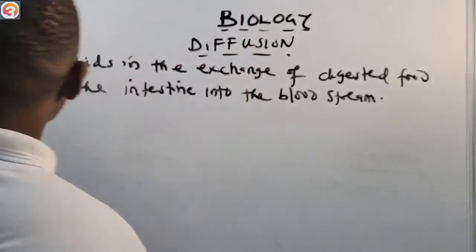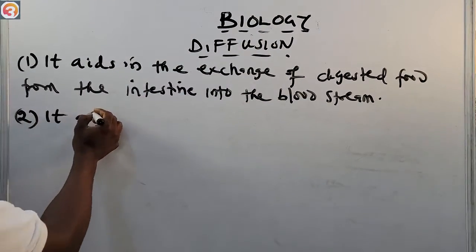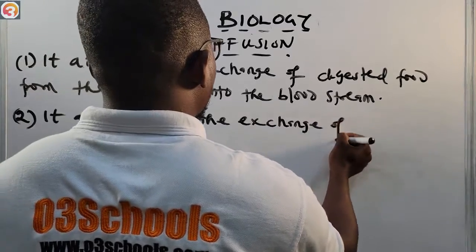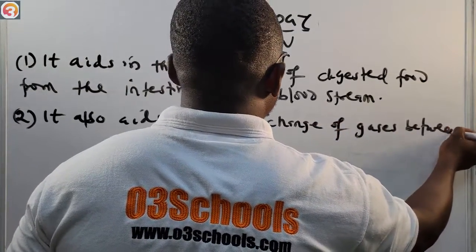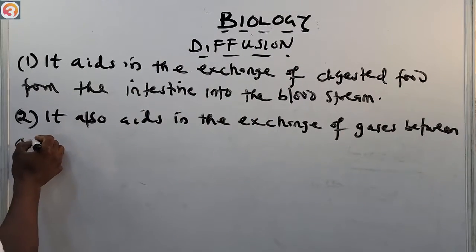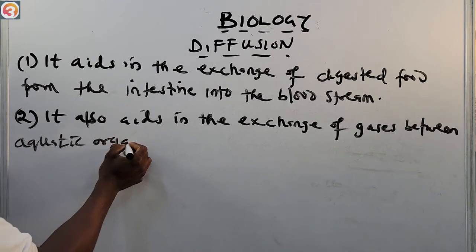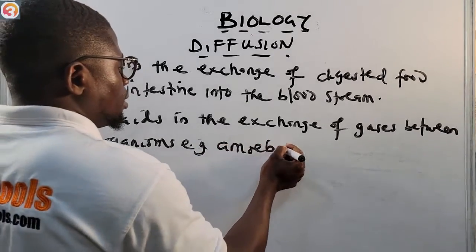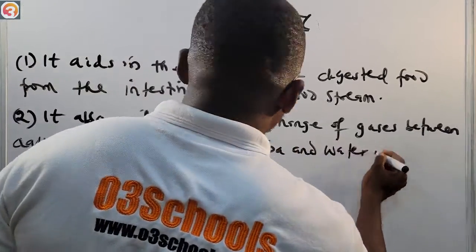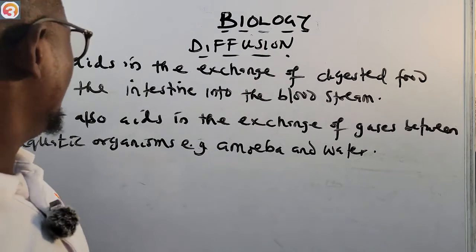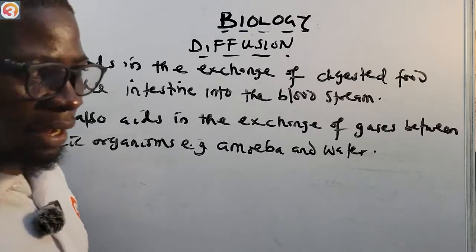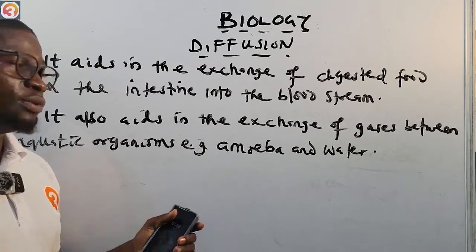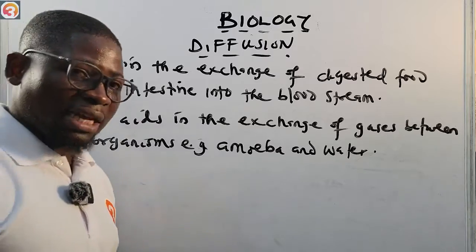Number two: diffusion also aids in the exchange of gases between aquatic organisms — for example, amoeba and water. It helps in the exchange of gases between aquatic organisms such as amoeba.